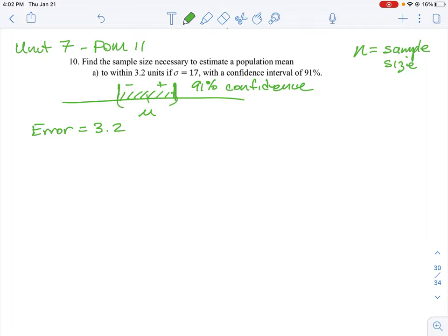The key formula we need here is z alpha over 2 times sigma over root n equals our error bar. We're going to be plus 3.2 units and minus 3.2 units based on that formula.